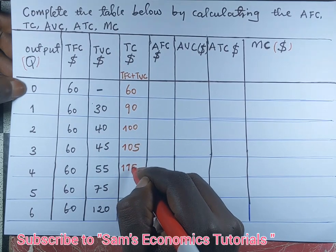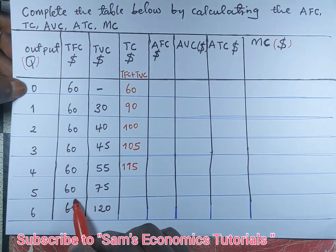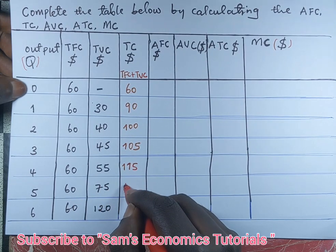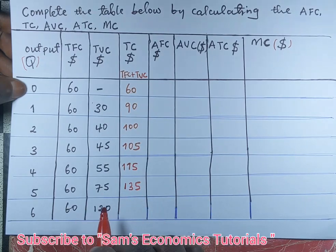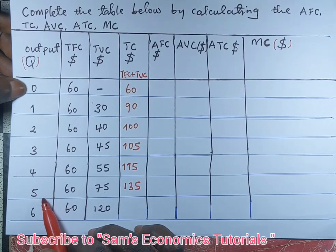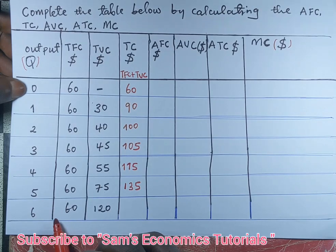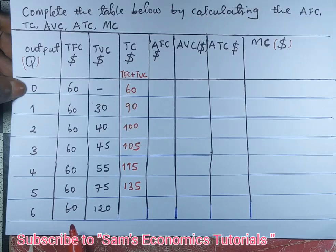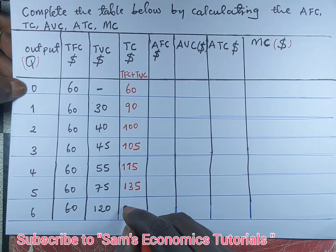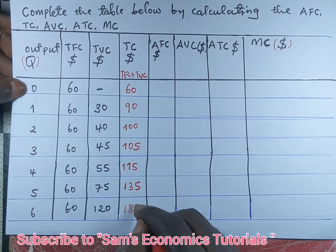When we add 60 plus 75, we get 135 US dollars — that's our total cost when five units of output are produced. When six units of output are produced, total cost is total variable cost plus total fixed cost: 60 plus 120, which gives us 180 US dollars.